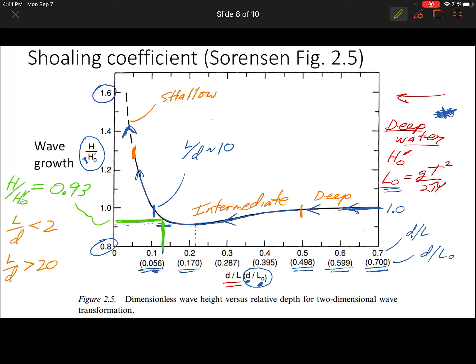The key bit of physics that you can really see very clearly with this shoaling coefficient is that the wave height or wave amplitude will actually decrease when it gets to intermediate depth water. And it's not until it becomes a real shallow water wave that you see any sort of dramatic wave growth.